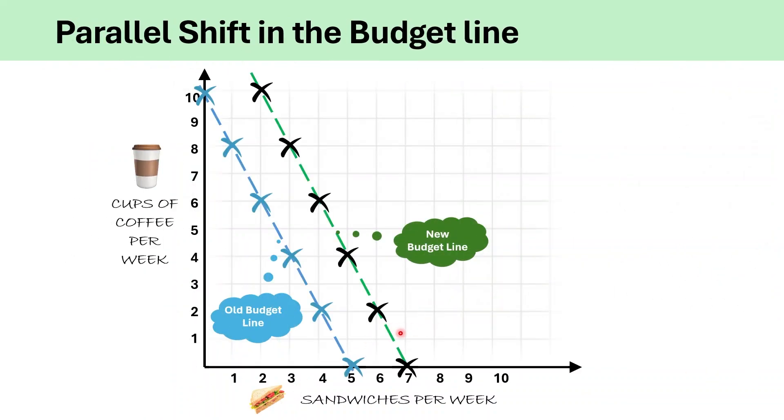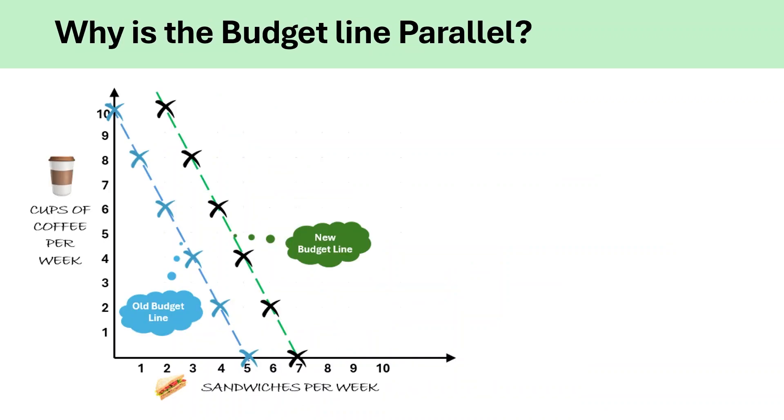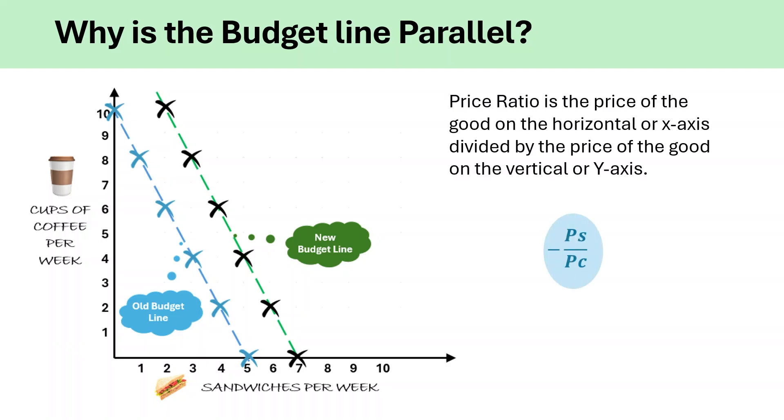Notice how the new budget line is parallel to the original budget line. Now, why does this happen? It's because there is no change in the slope of the budget line. If you remember from the previous video, the slope of the budget line is equal to the price ratio. In our example, this would be the price of sandwiches divided by the price of coffee. Since a change in income doesn't affect the prices of sandwiches or coffee, the price ratio remains constant and therefore the slope also remains the same. Remember that when the consumer's income increases or decreases, the budget line shifts but it remains parallel to the original.